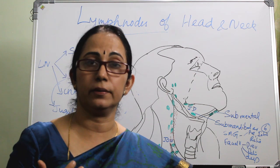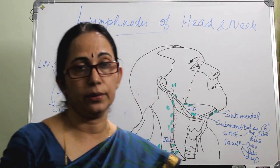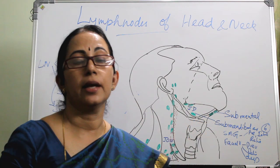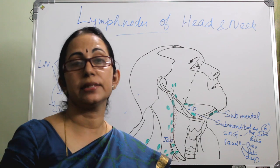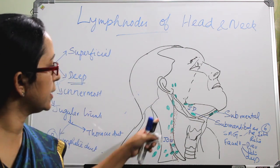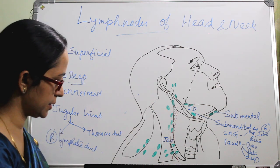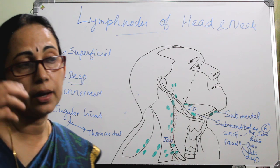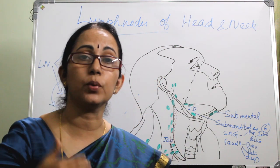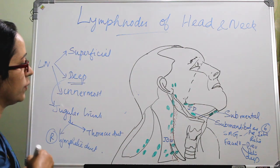The next important group of deep lymph nodes is the jugular chain, found around the internal jugular vein, and sometimes within the carotid sheath itself. These nodes are seen anterior, posterior, and lateral to the internal jugular vein. They are divided into upper deep cervical, middle deep cervical, and lower deep cervical groups.